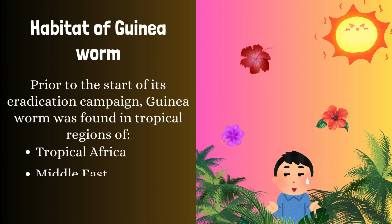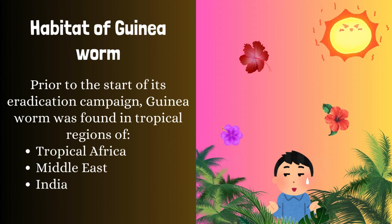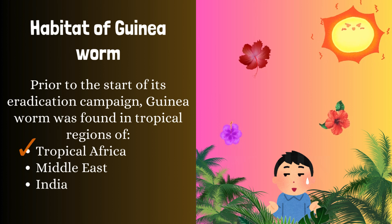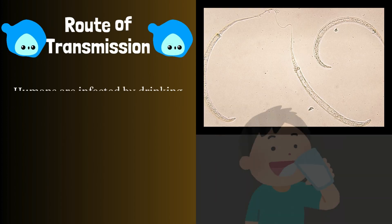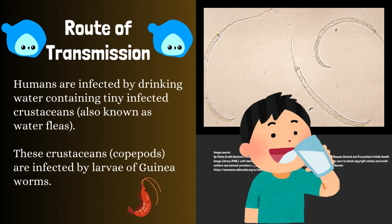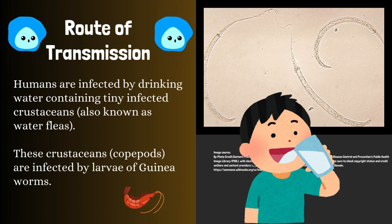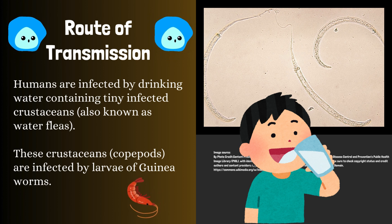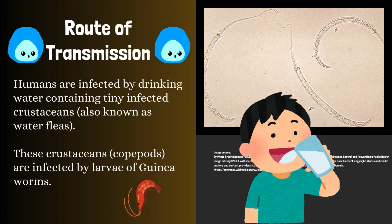Habitat of guinea worm: prior to the start of its eradication campaign, guinea worm was found in tropical regions of tropical Africa, the Middle East, and India. Route of transmission of guinea worm: humans are infected by drinking water containing tiny infected crustaceans, also known as water fleas. These crustaceans, copepods, are infected by larvae of guinea worms.